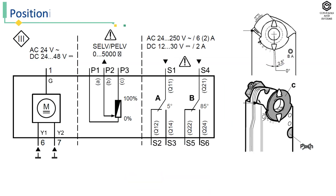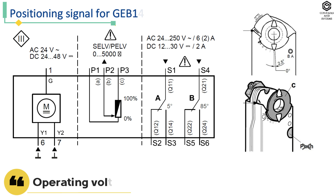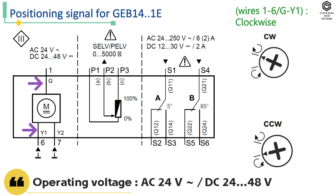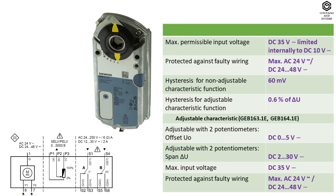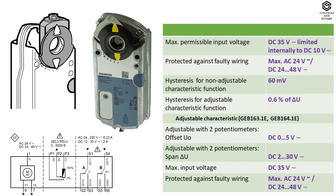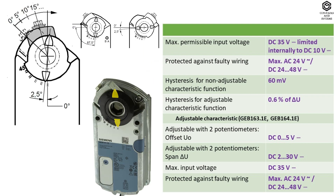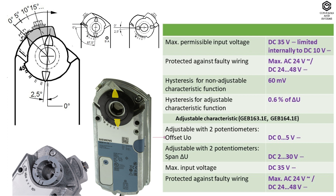Inputs: positioning signal for GEB 141.1E — wire terminals 1 and 6 for clockwise, wire terminals 1 and 7 for counterclockwise. The table indicates the ranges of maximum permissible input voltage, protection against faulty wiring, hysteresis for non-adjustable and adjustable characteristic function, offset, span, and maximum input voltage.